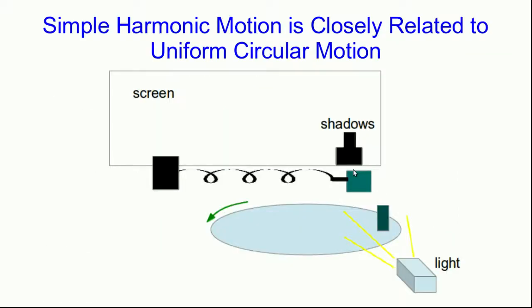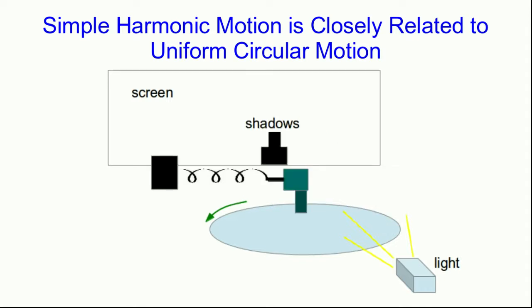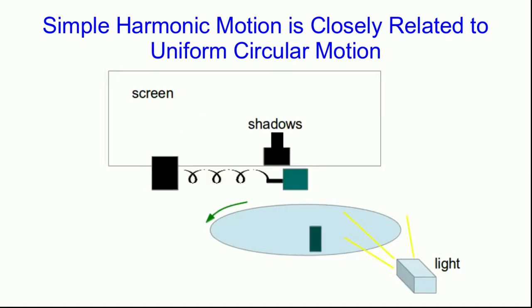There turns out to be a rather special and close relationship between simple harmonic motion and uniform circular motion. If you set up an object that's rotating so that it's in line with an object in simple harmonic motion and arrange for their periods to match and for the amplitude of the simple harmonic motion to be the same as the radius of the circular motion, then if you shine a light across them you'll find that their shadows follow each other.